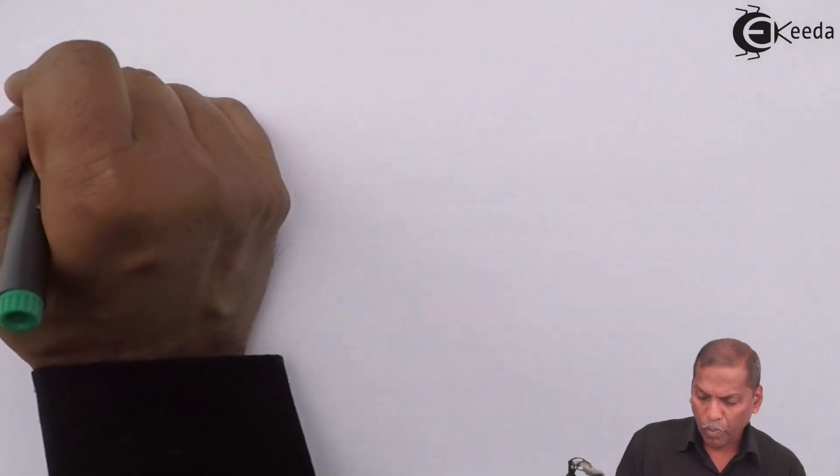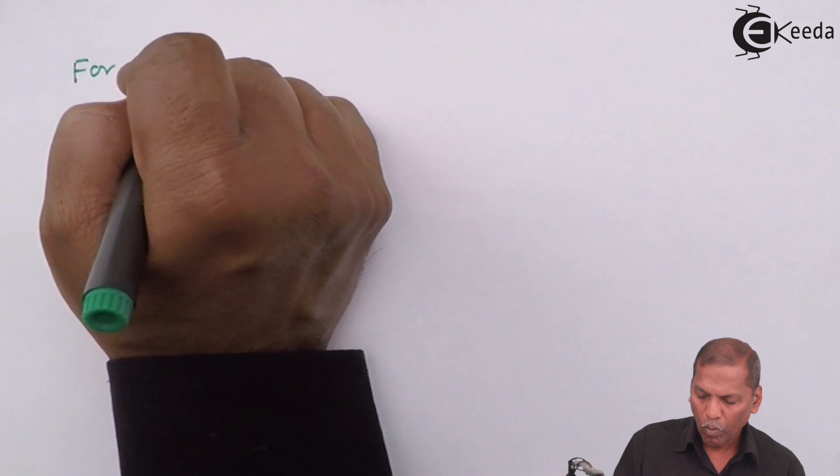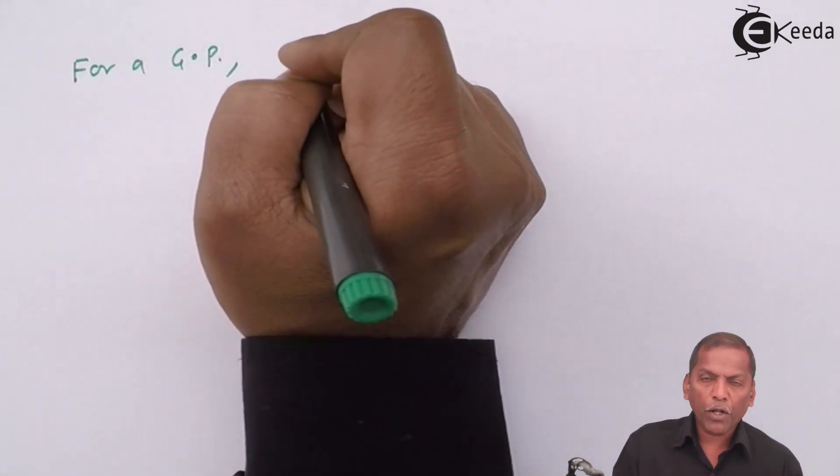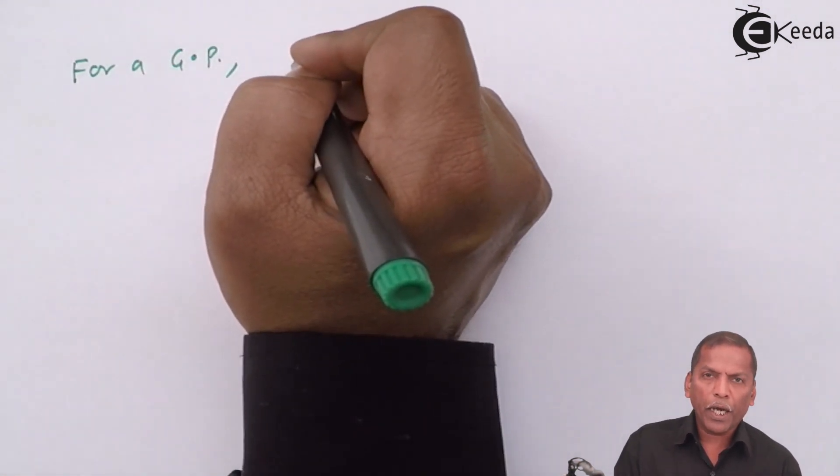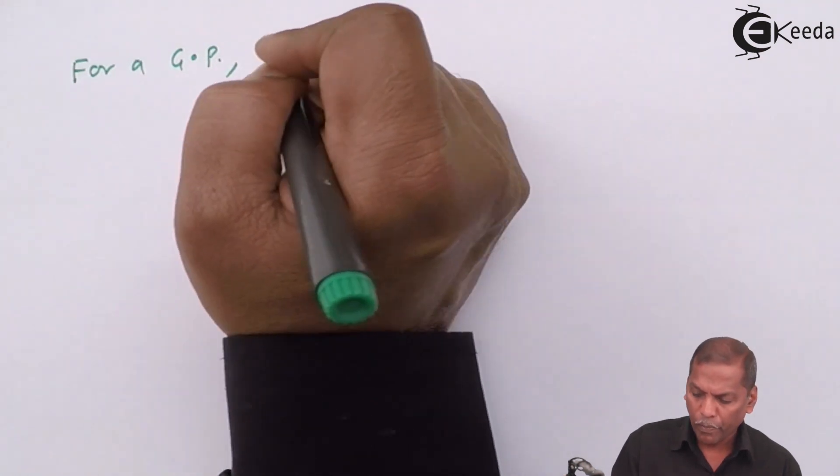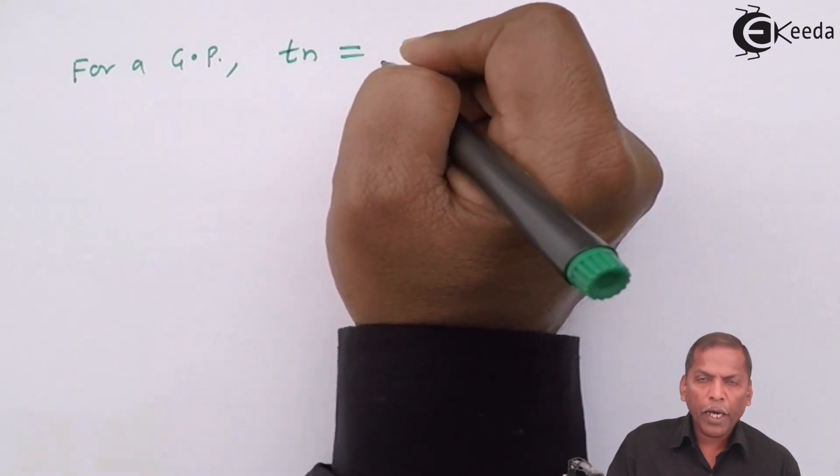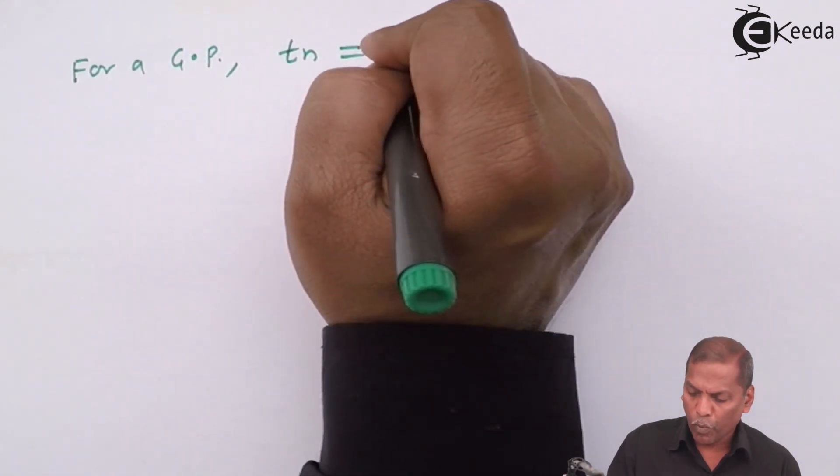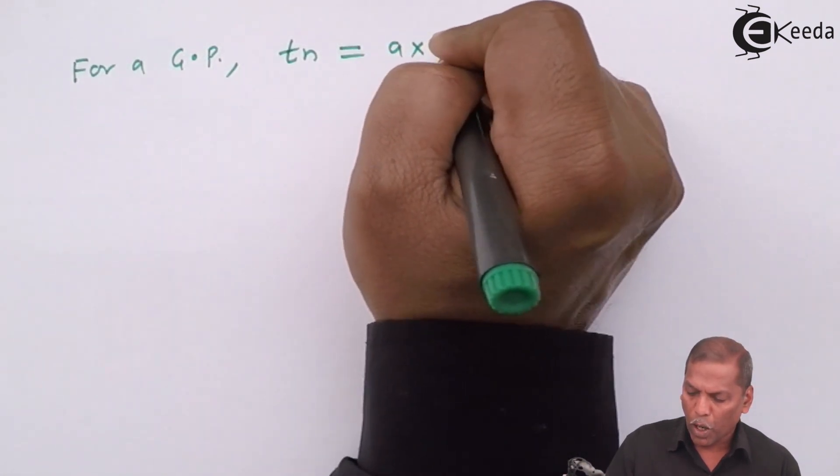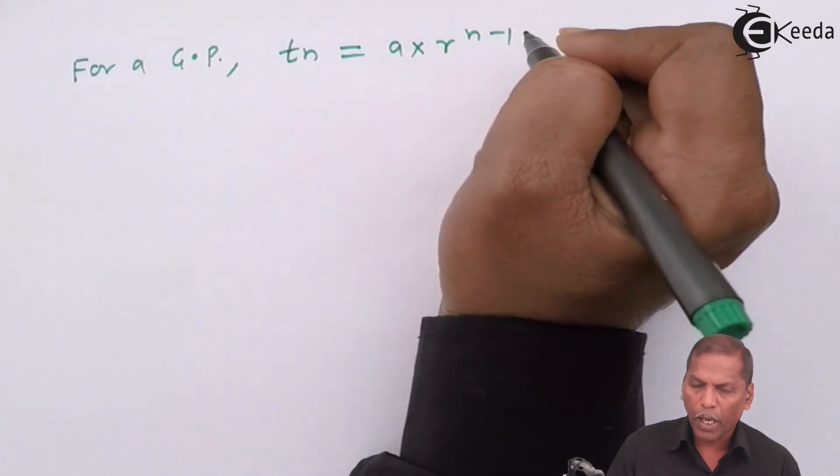Now for GP, nth term that is Tn is given by Tn equals a into r raised to n minus 1.